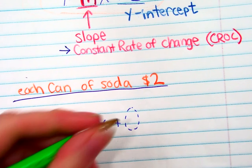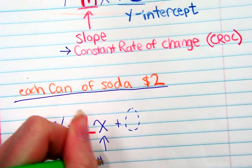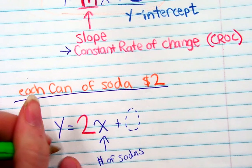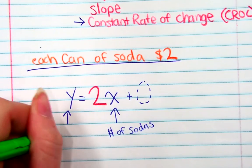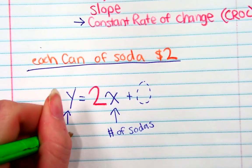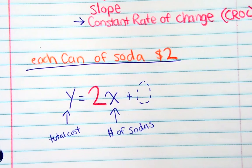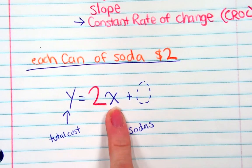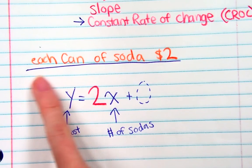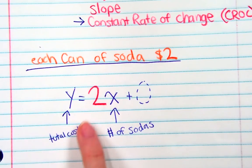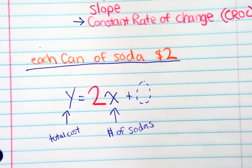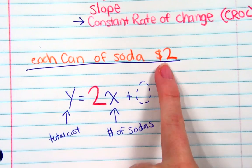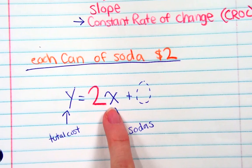X is the number of sodas I'm going to buy, and y represents your total cost. Let's see if that works: if I buy one can of soda, each can is $2, so I'm going to spend $2 — 2 times 1 is 2. If I buy 5 cans of soda, each one is $2, so I do 2 times 5 and I get 10.